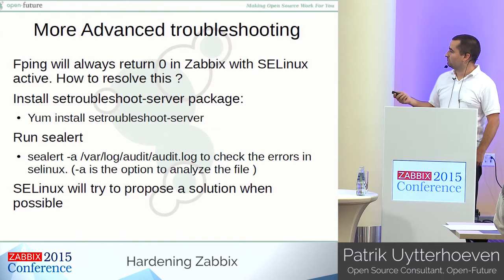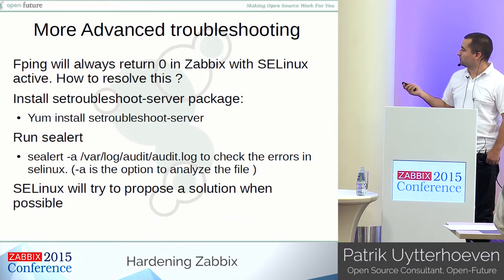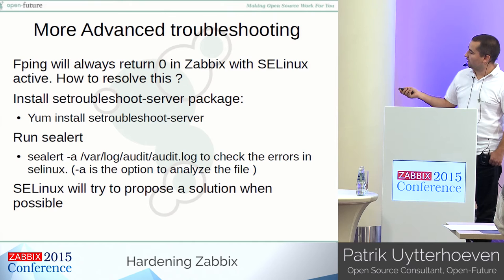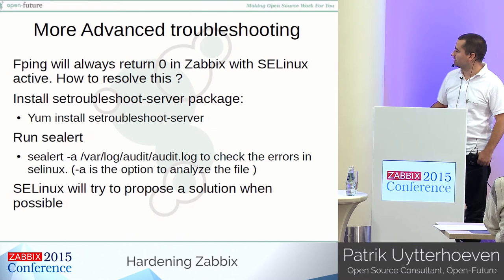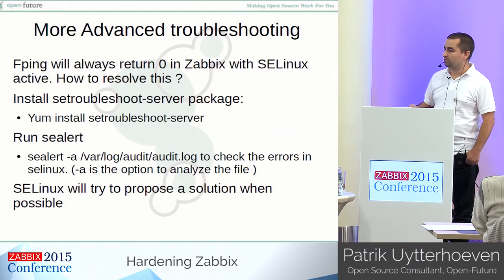Most people go into panic mode and just disable SELinux. But the only thing we have to do is install one package: the `setroubleshoot-server` package. Just do `yum install setroubleshoot-server` and it's installed. Then you only have to run one line: `sealert -a /var/log/audit/audit.log`. It will process and analyze the file with the `-a` option and give you feedback about all the problems that SELinux has detected in your system and how to solve them.